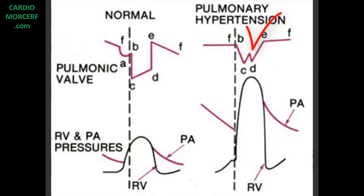During the systolic period, we occasionally see a mid-systolic closing with late systolic reopening of the valve. These are the three signs that may be encountered in the pulmonary valve when there is pulmonary arterial hypertension. The absence of an A-wave has an accuracy of more than 90% to diagnose pulmonary hypertension. The other signs are not as good and really not necessary for the diagnosis.